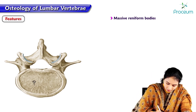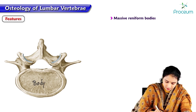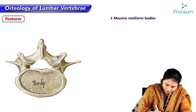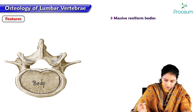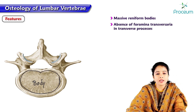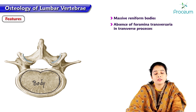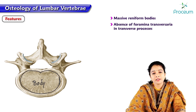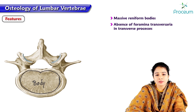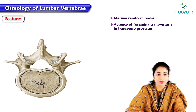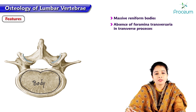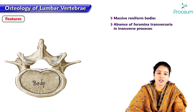We can see the body which is almost kidney-shaped. Another feature is the absence of foramen transversarium in the transverse process. Cervical vertebrae are mainly identified by foramen transversarium, and these openings present in the transverse process are absent in lumbar vertebrae.